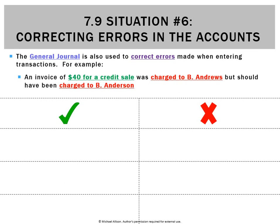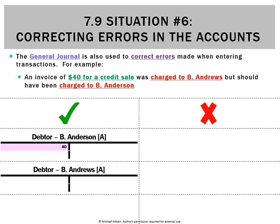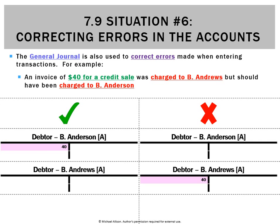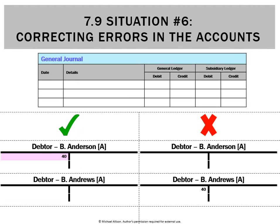In this case we've got an invoice of $40. A credit sale was made and charged to B Andrews but should have been charged to B Anderson. This is all subsidiary ledgers. In the general ledger we're fine because we did record a credit sale to a debtor — we just got the wrong debtor. We should have debited B Anderson's subsidiary account and nothing to B Andrews, but what we did was nothing to B Anderson and a debit to B Andrews, so we need to fix that.